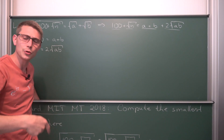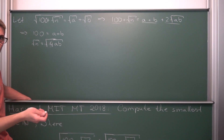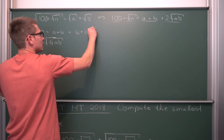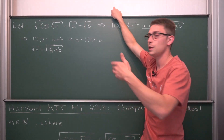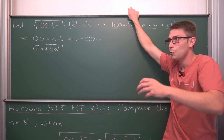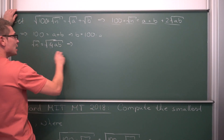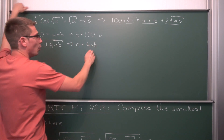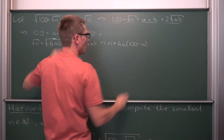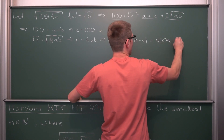Since 2 = √4, we get √n = √(4ab), so n = 4ab. Solving for b from the rational equation gives b = 100 − a. Therefore n = 4a(100 − a), which expands to 400a − 4a².